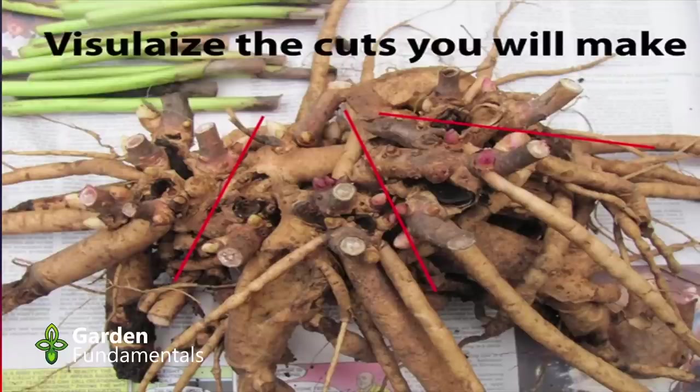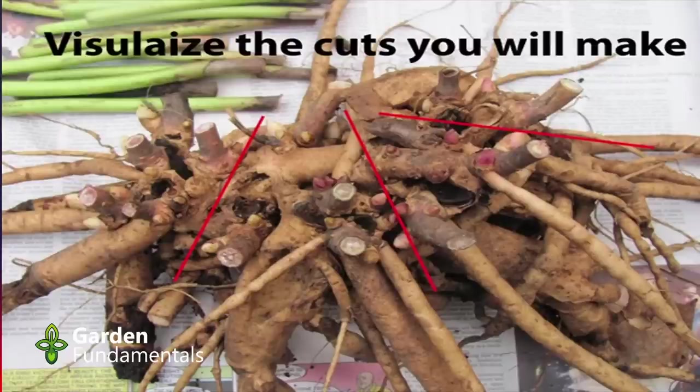This is an old peony root. It looks very congested and you could cut it in a number of different ways — the red lines show three possible splits. It's important that each section ends up with some of the roots and some of the new buds, so that the plant will grow again. Peonies are a good example of a plant that will come back and flower fairly quickly after division, provided you leave the divisions quite large.